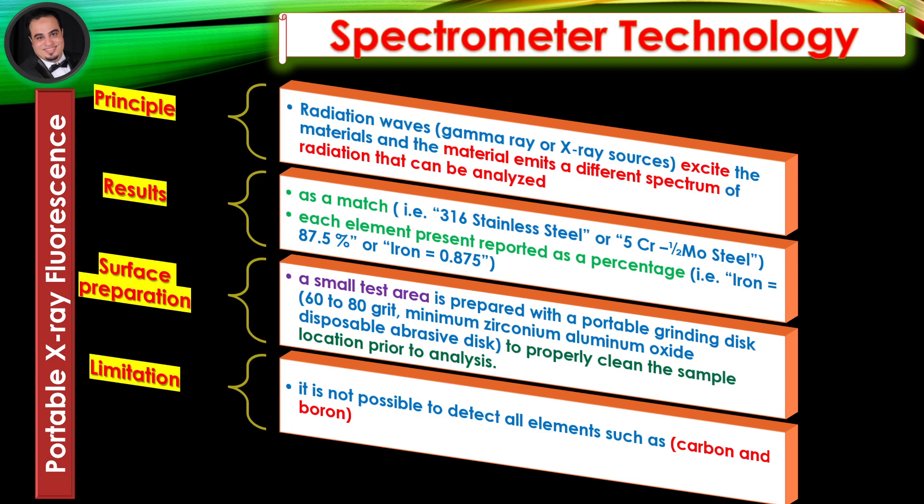Surface Preparation: A small test area is prepared with a portable grinding disk, 60 to 80 grit, minimum zirconium-aluminum oxide disposable abrasive disk, to properly clean the sample location prior to analysis.